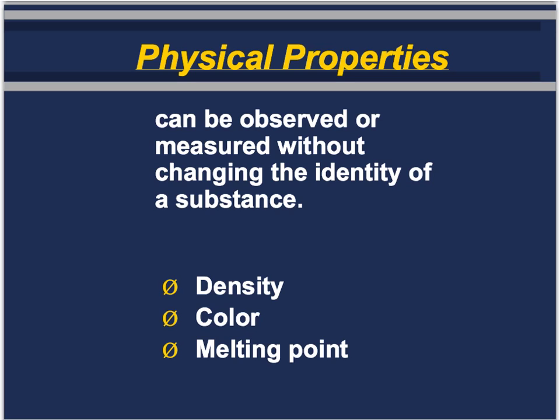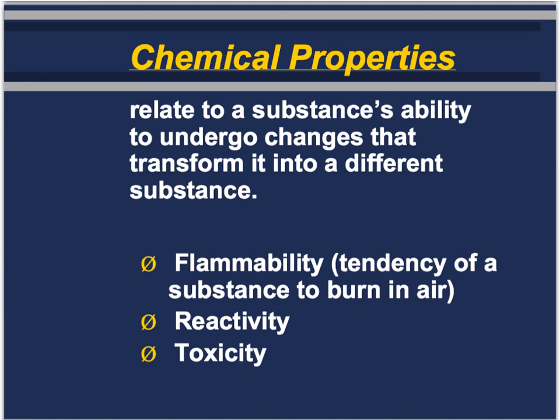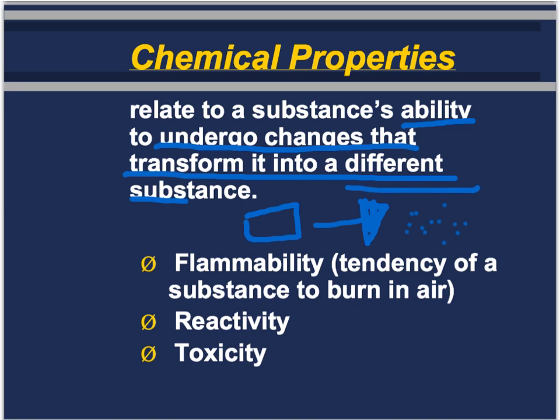Physical properties, as opposed to chemical properties. Physical properties can be observed or measured without changing the identity of the substance — density, color, and melting point are all physical properties. On the other hand, a chemical property relates to the substance's ability to undergo change that transforms it into a new substance. Examples include flammability, reactivity, and toxicity. If I burn a piece of paper, it turns into a pile of ashes — it's definitely turned into something different. A piece of wood burns into charcoal, which is definitely something new.